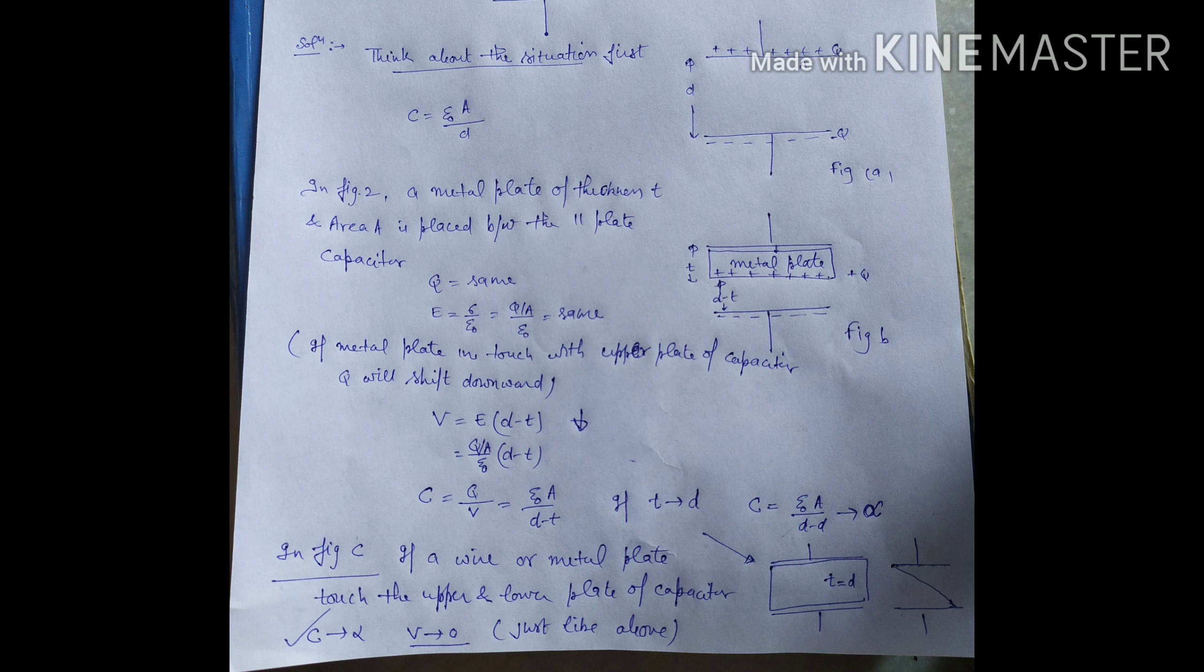Think about the situation first. For a parallel plate capacitor, C equals epsilon not area upon D. The upper plate is positive, the lower plate is negative. The distance between the plates is D and the area of the plate is A.